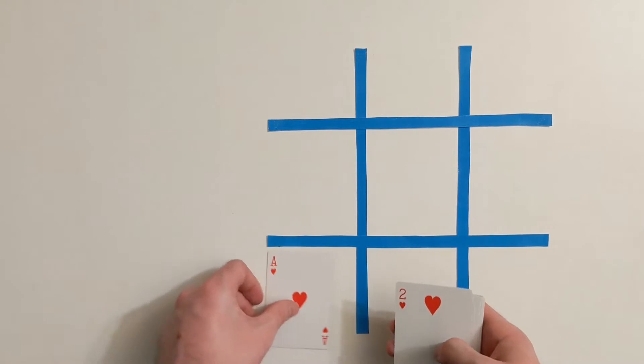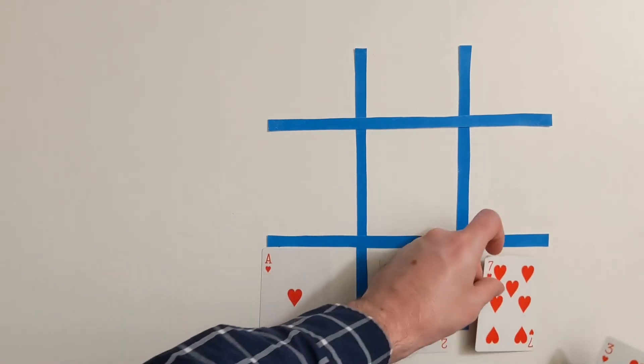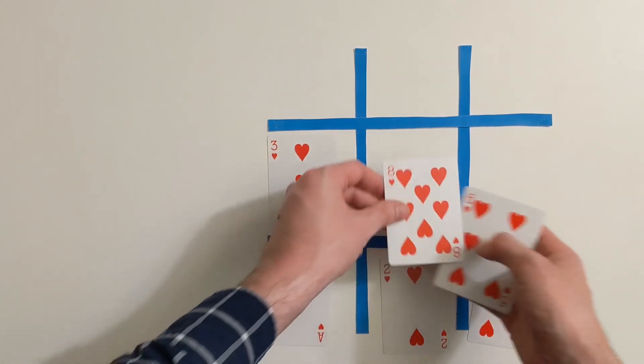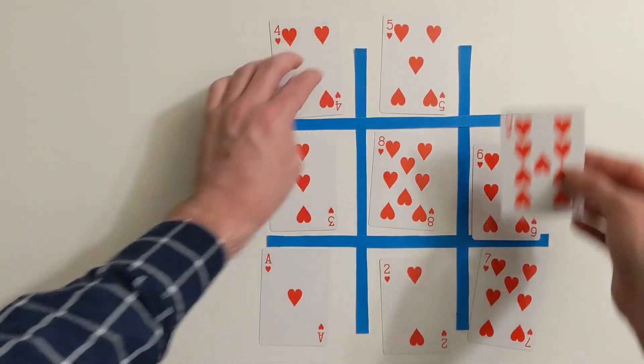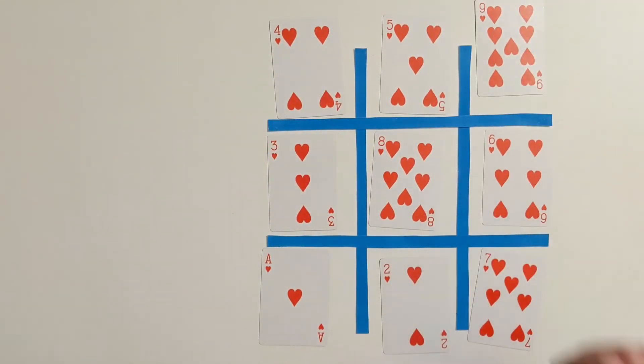To get started, I'm just going to place my numbers randomly in the grid and see how my rows all sum up. Now, I see that my first row adds up to 18, my second row adds up to 17, and my third row adds up to 10.